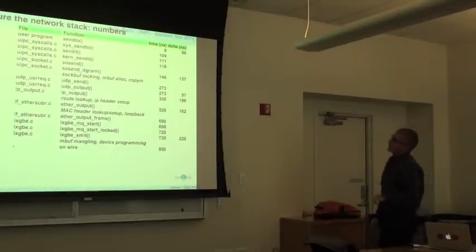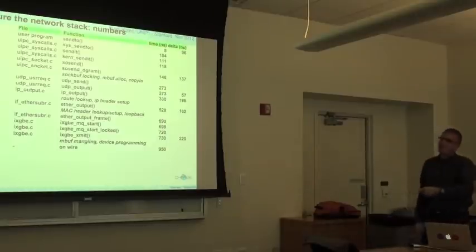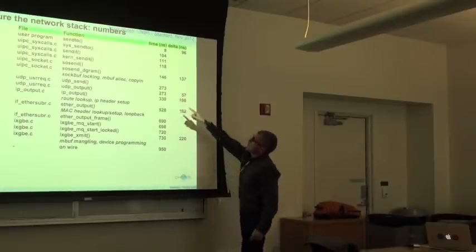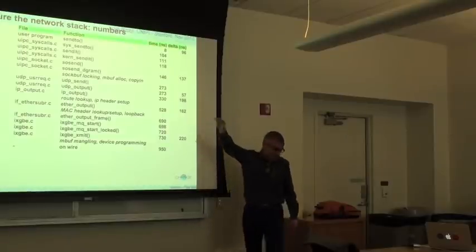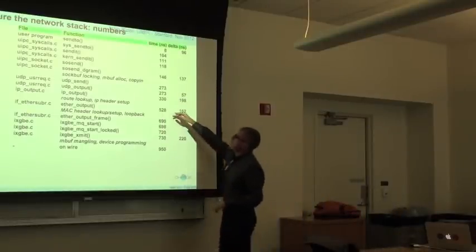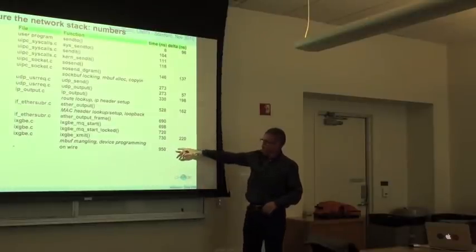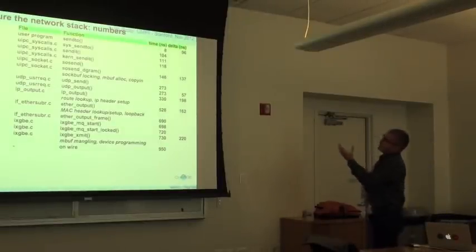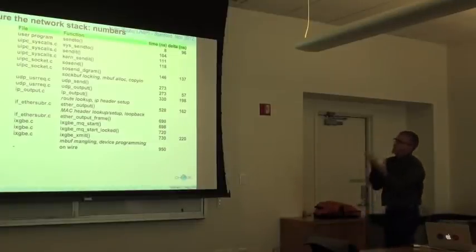The table shows the list of functions from sendto() down to sending the packet to the wire, and how much time is spent if you abort processing at each level. If you abort right before sendto(), it takes about 1 nanosecond for the user space generator. After the socket layer it's 339 ns, and all the way to the wire on FreeBSD is approximately 1,500 ns total. There isn't a single place where most of the time is spent — time is distributed across many layers.